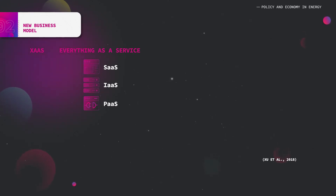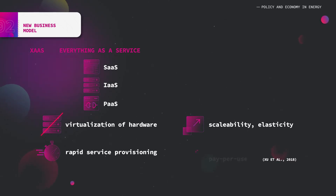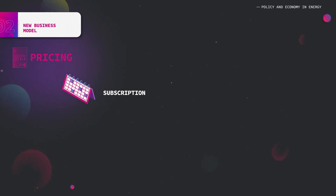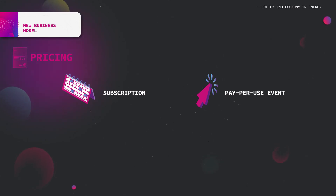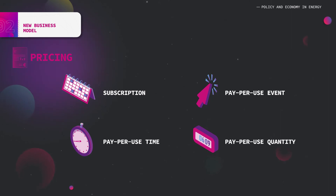The promises of everything as a service include limited investment in hardware since owning a server isn't required, reduced delay between the request and the provisioning, and reduced issues related to usage or demand increase. Consumers pay on a pay-per-use basis. These service-oriented business models use one of four pricing models: a subscription where the customer pays for access during a period of time; pay-per-use event; pay-per-use time for the duration of usage; and pay-per-use quantity where customers pay for the quantity of resources consumed.